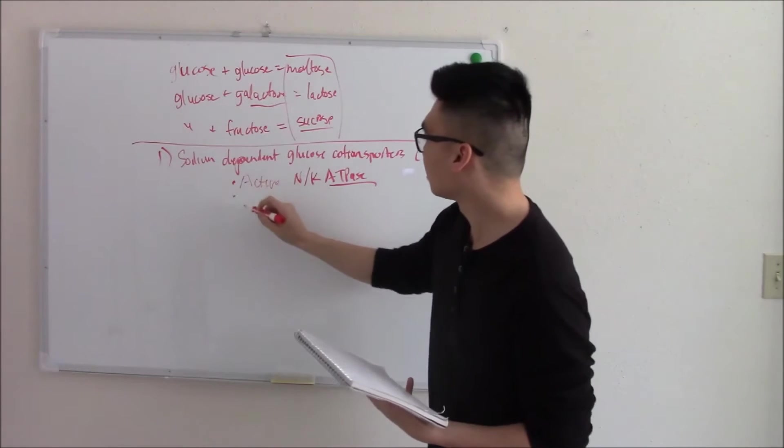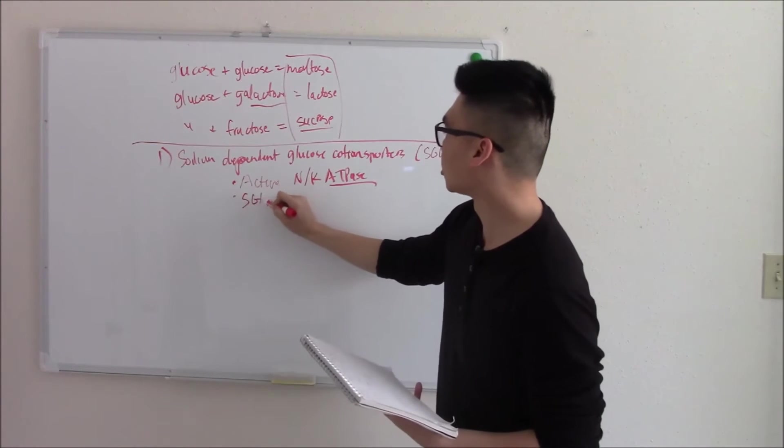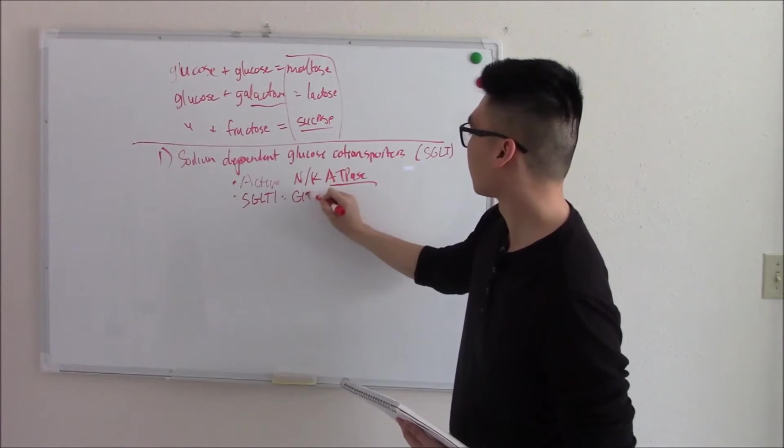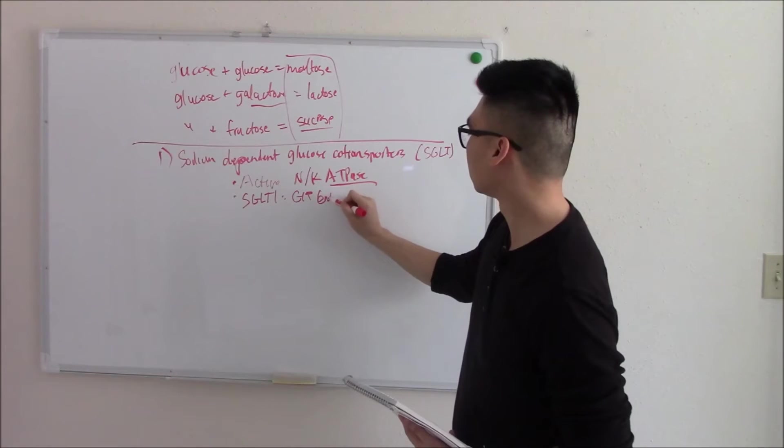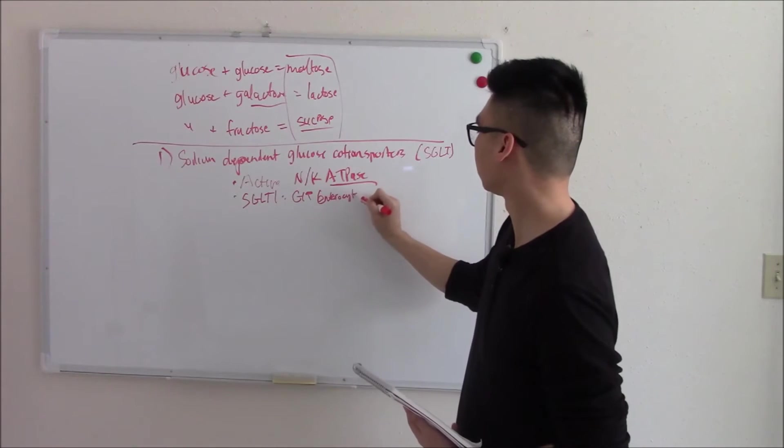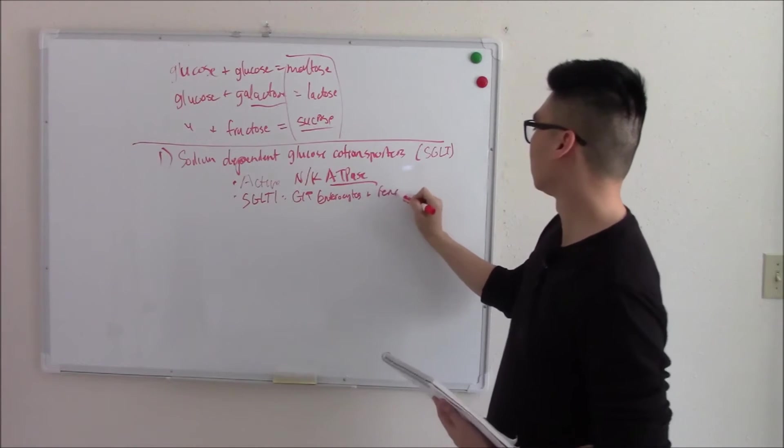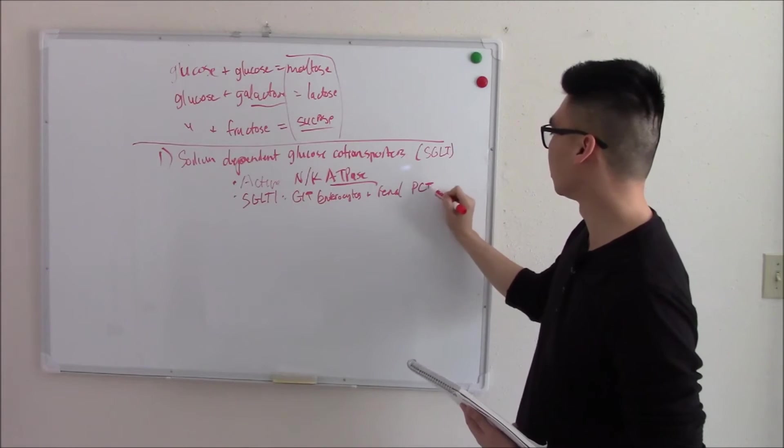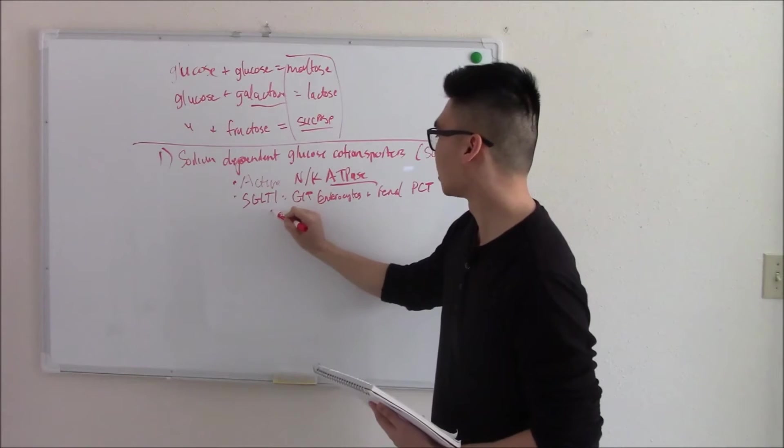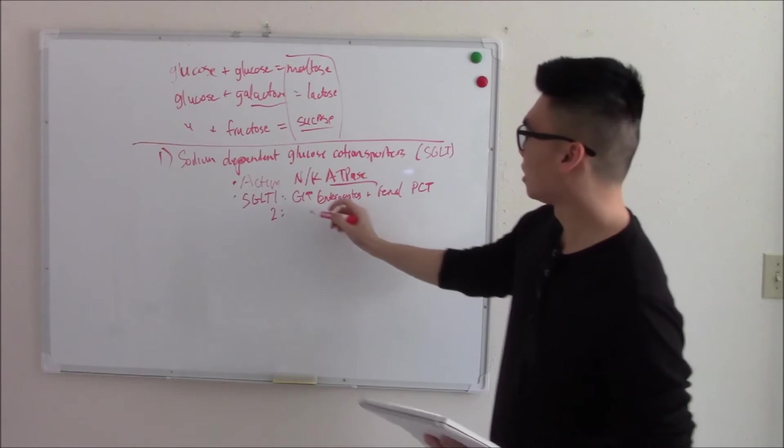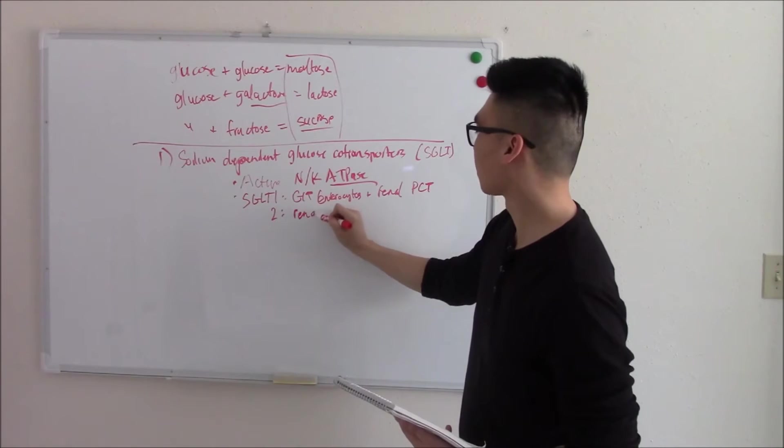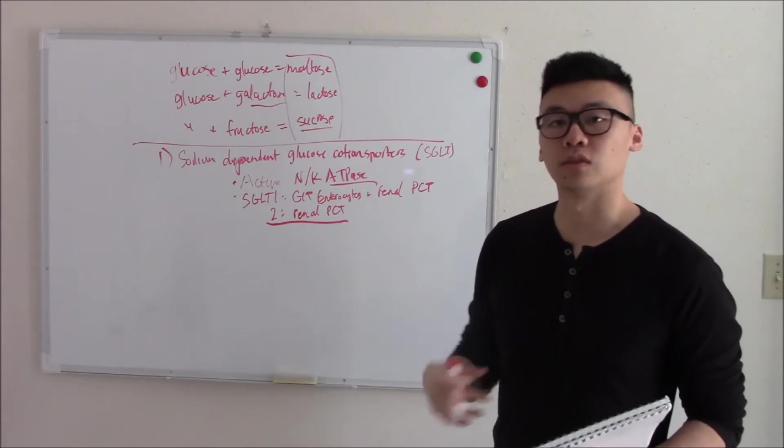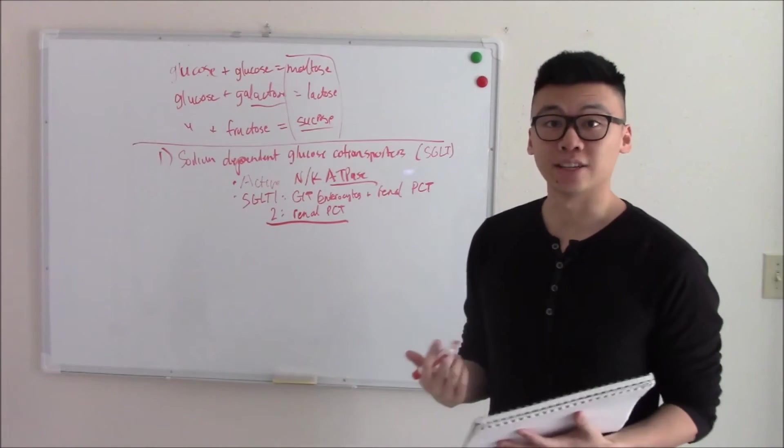There are two main subtypes. SGLT1, found in your gut enterocytes, and found in your renal proximal convoluted tubule. SGLT2, found mainly in your renal PCT. And this one is the big one. This one is what's responsible for most of your sugar reabsorption in your PCT.